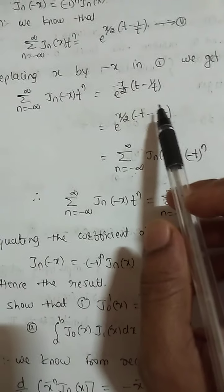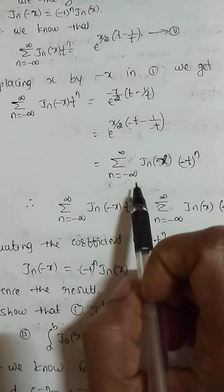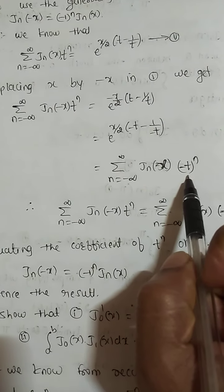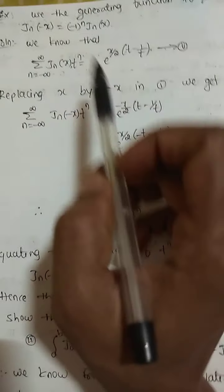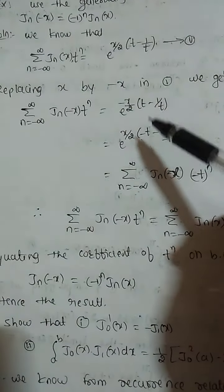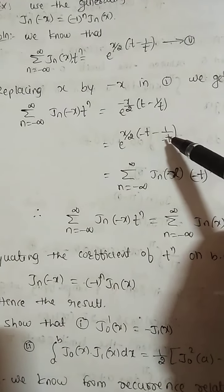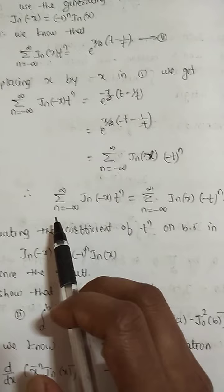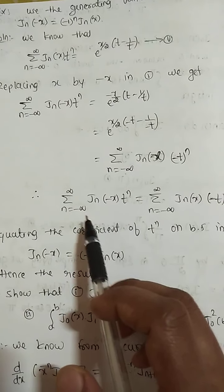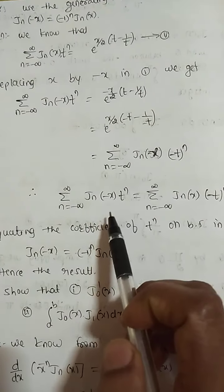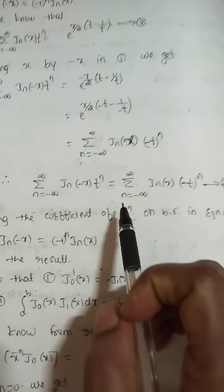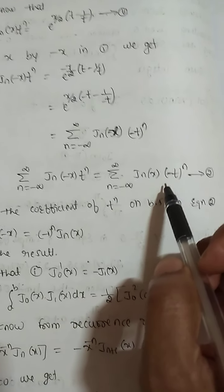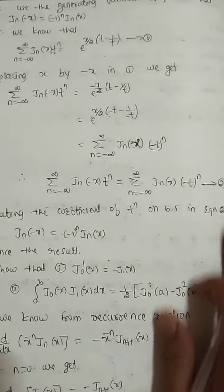Using the generating function formula, this can be written as summation n from minus infinity to infinity of J_n(x) times (−t)^n. Here instead of t we have minus t, so instead of t^n we write (−t)^n. Therefore: summation J_n(−x) t^n equals summation J_n(x) (−t)^n. We call this equation number 2.